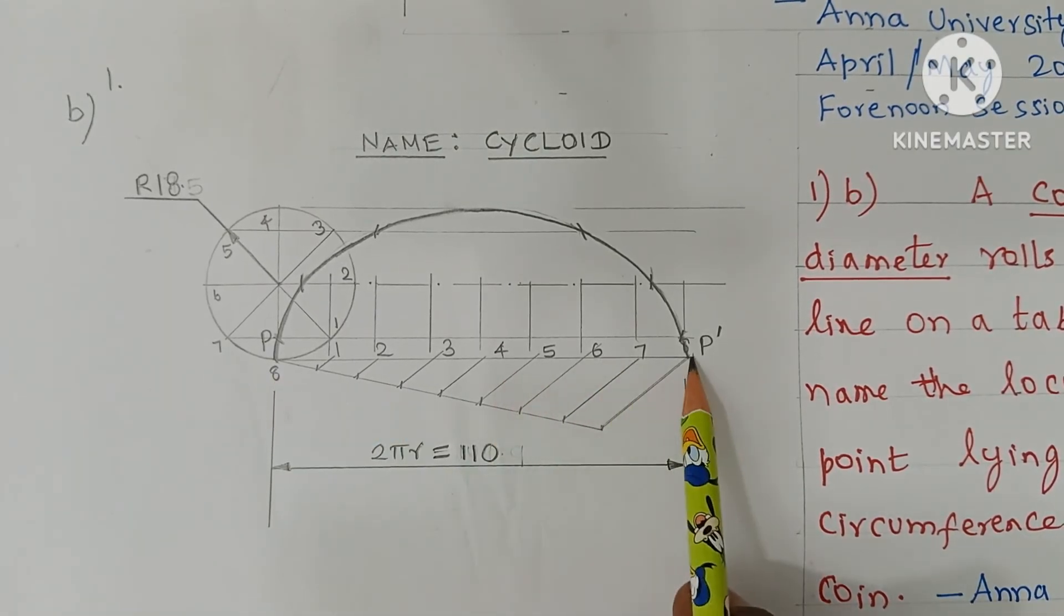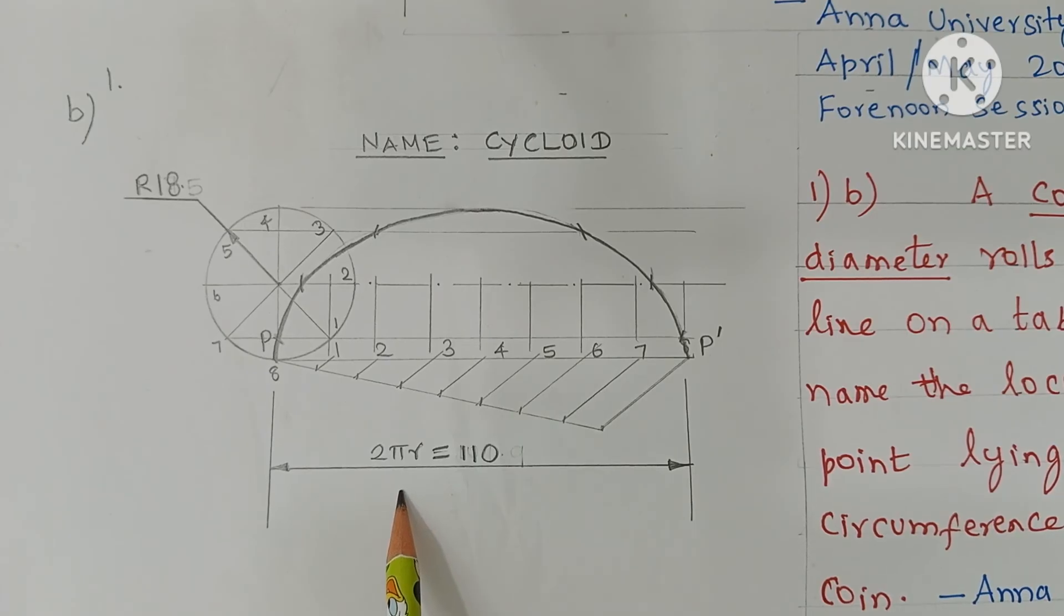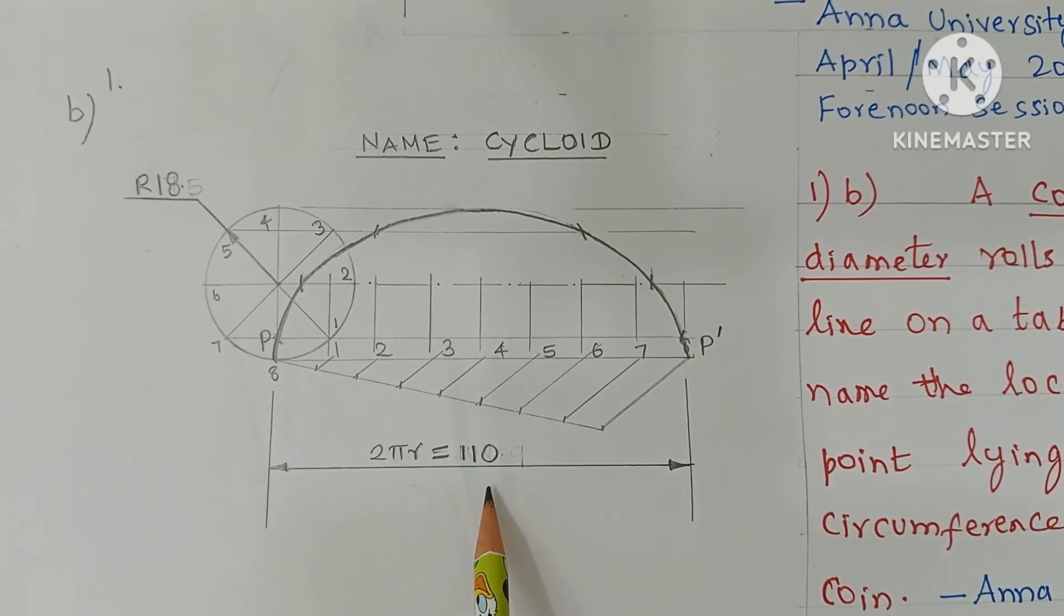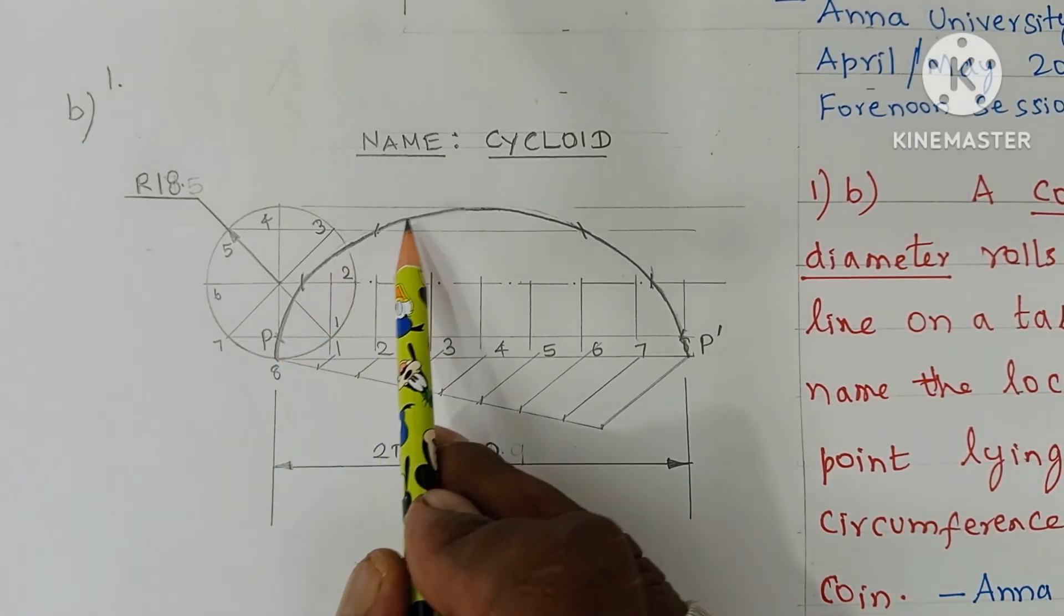The P to P dash distance is equal to circumference of circle, 2πr. School days formula 2πr or πd. Put in approximately 110 mm. And the curve, answer curve for this given question is cycloid.